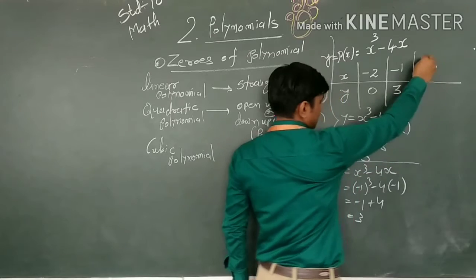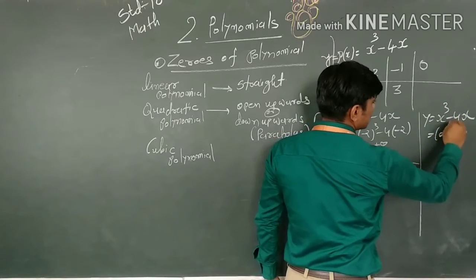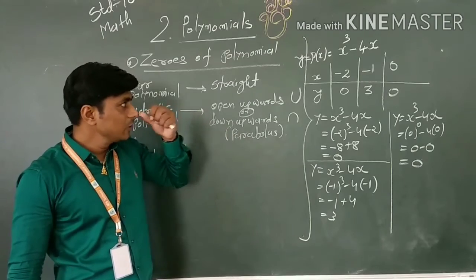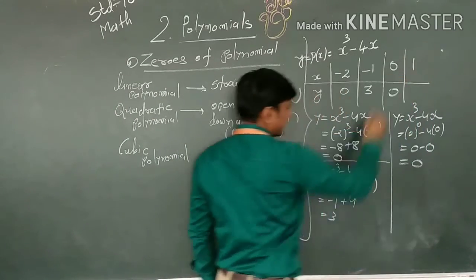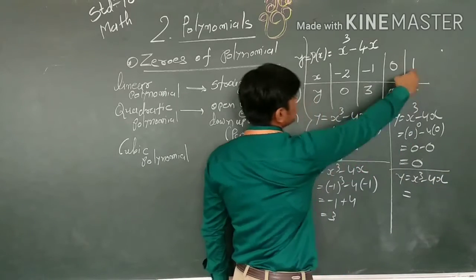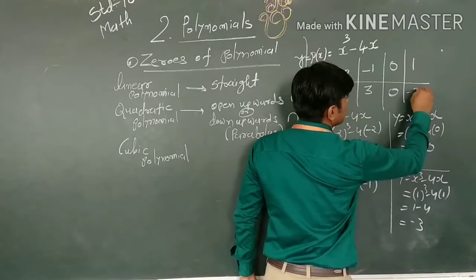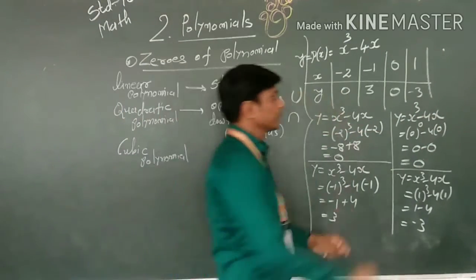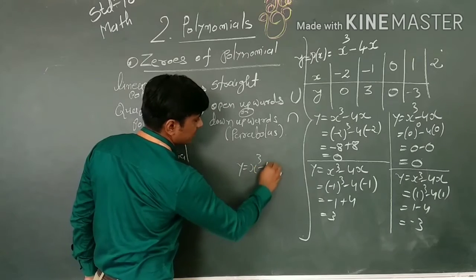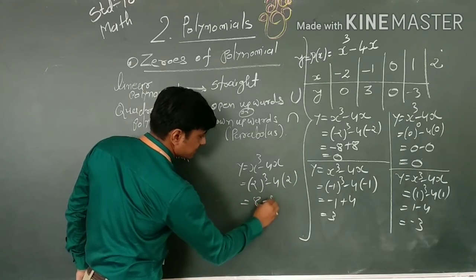Now take x = 0. Our polynomial is x³ − 4x. With x = 0, we have 0 − 0 = 0. Now take x = 1: y = 1 − 4 = −3. And take x = 2: y = 8 − 8 = 0. Corresponding value of y is 0.